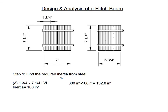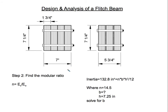Step one is to find the required inertia from the steel. We know we need 300 inches to the fourth for total inertia. For the flitch beam, I'll use three LVLs, which provide 168 in⁴. The difference — 300 minus 168 — gives us 132.8 in⁴, which is the required inertia that the steel plates must provide. Now we need to find the width of the steel plate.